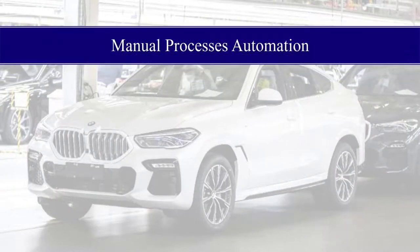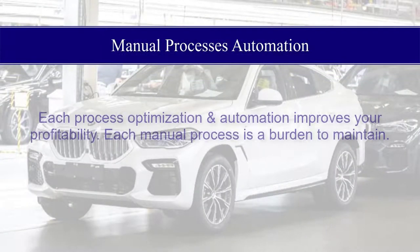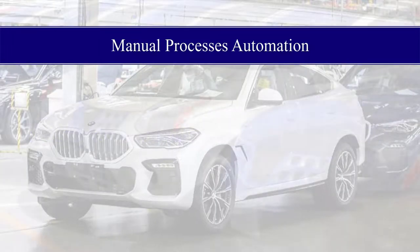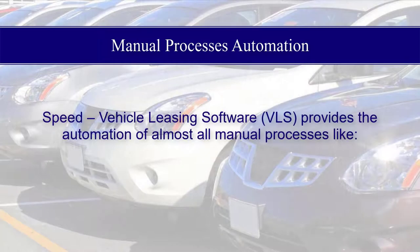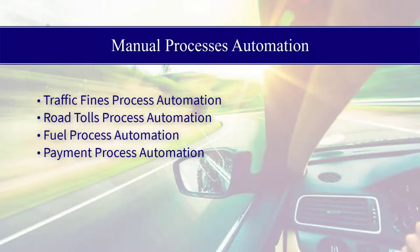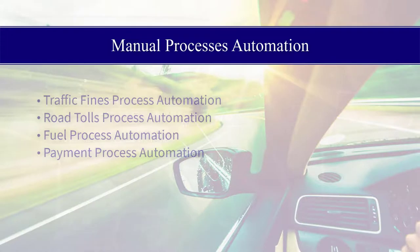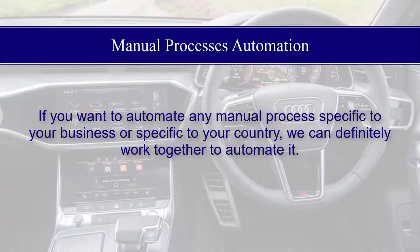Manual Processes Automation. Each process optimization and automation improves your profitability. Each manual process is a burden to maintain. Speed Vehicle Leasing Software (VLS) provides the automation of almost all manual processes, like Traffic Fines Process Automation, Road Tolls Process Automation, Fuel Process Automation, and Payment Process Automation. If you want to automate any manual process specific to your business or country, we can definitely work together to automate it.